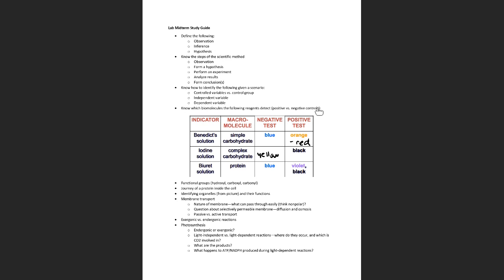If you don't remember the colors and what they indicate, go back to your lab manual. You may be presented with a scenario giving a certain percentage of glucose — a very low percentage might yield an intermediate orange rather than brick red if there's a lot of glucose. For the iodine test, if you have starch in solution, it's going to turn black. It gets really dark, and that indicates a positive test.